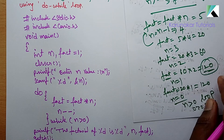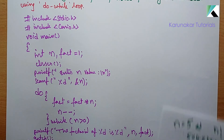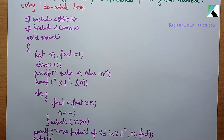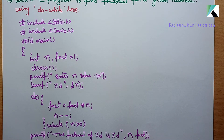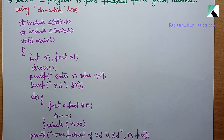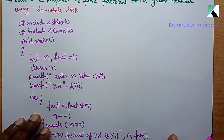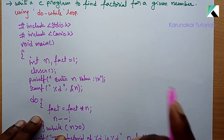Okay, this is the program. Write a C program to find factorial for a given number. So once it is done, go for the output.